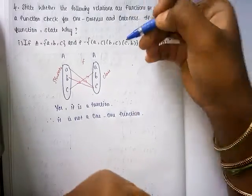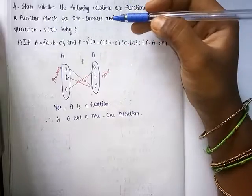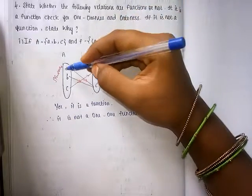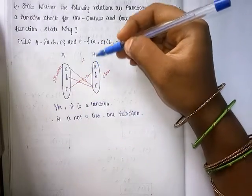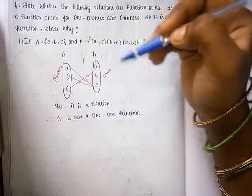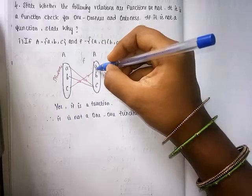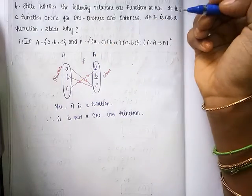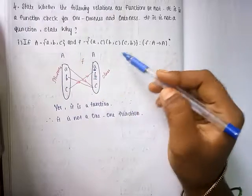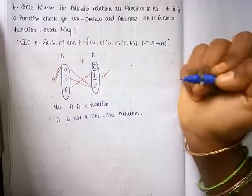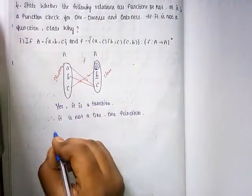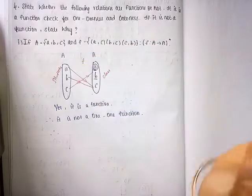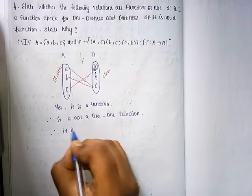Next, check onto function. The domain maps to the co-domain. For an onto function, all elements in the co-domain must have a pre-image — every image must have a pre-image. Looking at the mappings: a maps to c, b maps to c, and c maps to b. So element 'a' in the co-domain does not have a mapping. That means it is not an onto function, because one image does not have a pre-image.